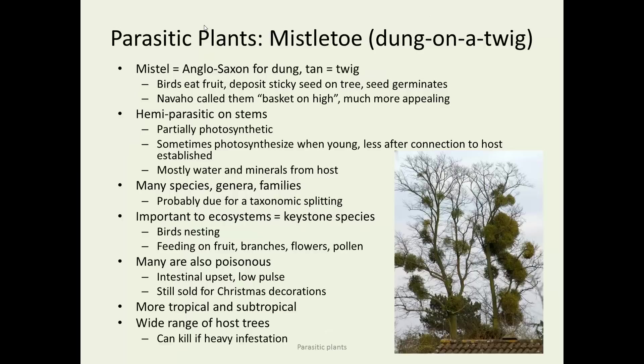Mistletoe is parasitic, with an interesting name derivation meaning 'dung on a twig.' In Anglo-Saxon, mistil meant dung and tan meant twig. These species spread when birds eat their fleshy fruit, process the seed, and deposit it on other trees. The seed germinates there because it's very sticky — the bird droppings help glue it to the host — and then another infestation begins. The Navajo called them 'basket on high,' which is a more appealing name.